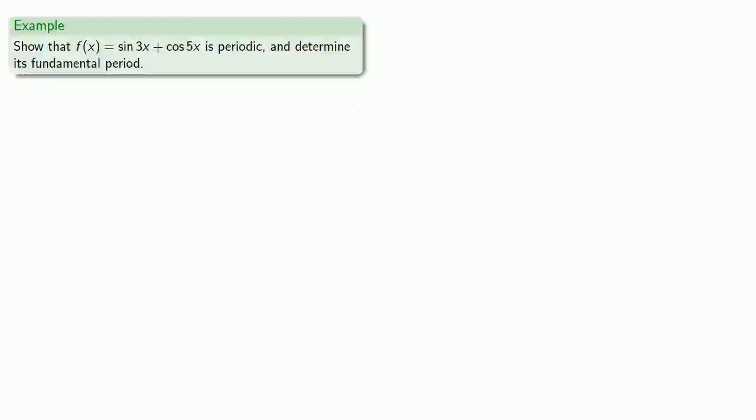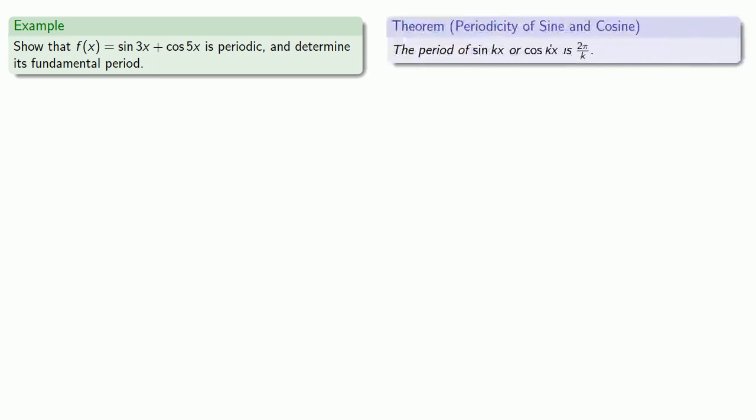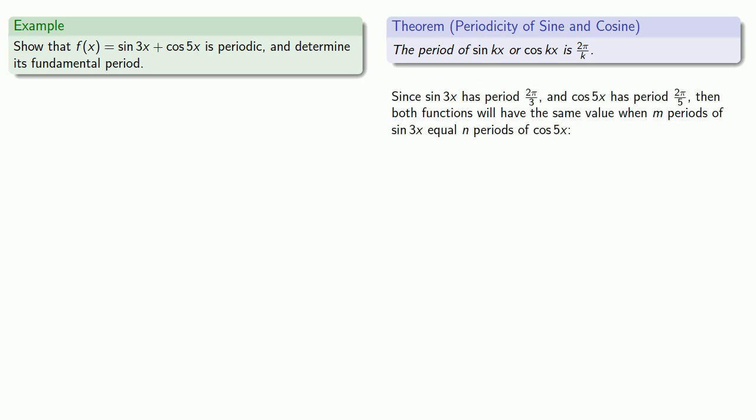Let's show that f(x) = sin 3x + cos 5x is periodic and determine its fundamental period. It's useful to remember that the period of sin kx or cos kx is 2π/k. Since sin 3x has period 2π/3 and cos 5x has period 2π/5, then both functions will have the same value when m periods of sin 3x equals n periods of cos 5x.